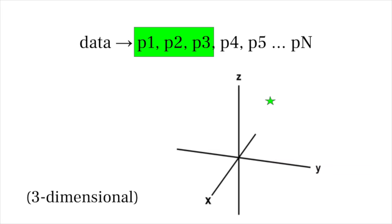That sounds really fancy, but all it really entails is picking a number — let's say three — and then plotting price one, price two, price three as point A in a three-dimensional coordinate system. We then plot price two, price three, price four as point B, and then price three, price four, price five as point C, and so on and so forth. Now we have a ton of data points in this three-dimensional space. The next step is to employ TDA — finally.